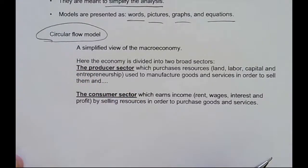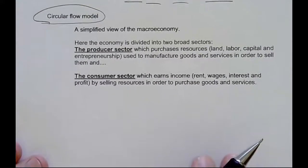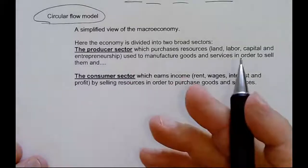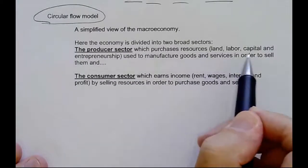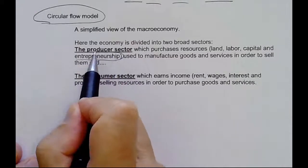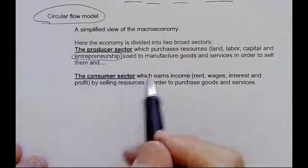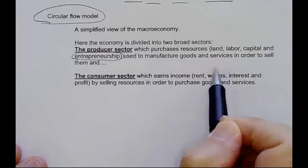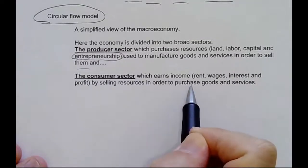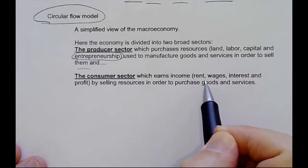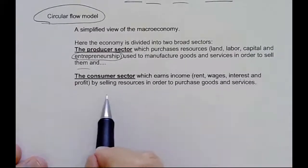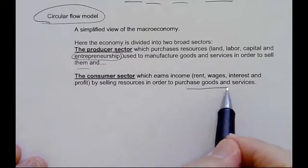The circular flow model separates the economy into two sectors: the producer sector, where we have our businesses, factories, and offices — they purchase resources such as land, labor, capital, and entrepreneurship, which is a special kind of resource involving running businesses and taking risks, used to manufacture goods and services to sell. Then we have the consumer sector, which earns income from renting out land, working for wages, getting interest on loans, and profit, by selling resources in order to purchase goods and services.